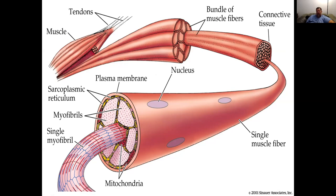You might think of your generalized cell with one nucleus, but skeletal muscles have hundreds of nuclei — up to 100. These cells are rather long and skinny and have a lot of nuclei. The cell membrane is known as the sarcolemma, and the endoplasmic reticulum is known as the sarcoplasmic reticulum, which stores calcium.